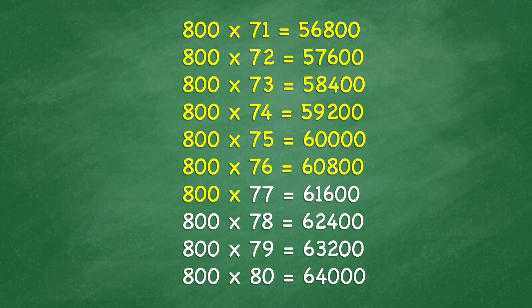800 times 77 equals 61,600. 800 times 78 equals 62,400. 800 times 79 equals 63,200. 800 times 80 equals 64,000.